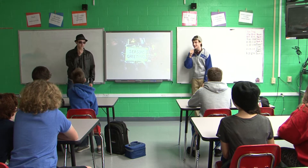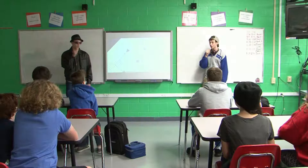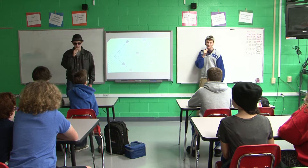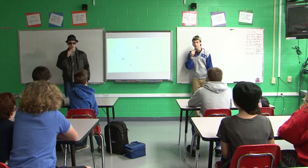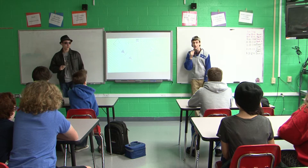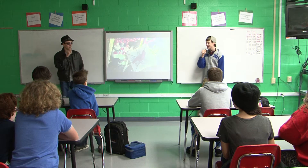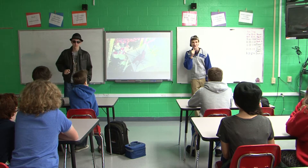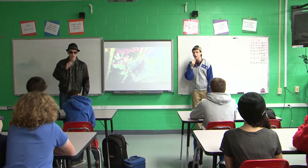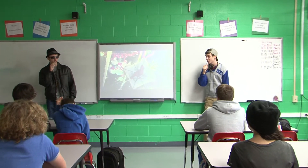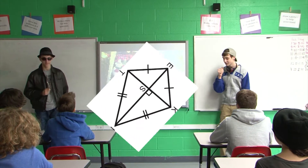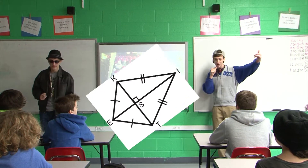A rhombus is a parallelogram with 4 congruent sides. Don't you worry about that test tonight, cause this rap is so flow, and you gotta know that the diagonals bisect opposite angles. And last but not least, the only thing that you need of these properties is perpendicular diagonals. Here we go, y'all.